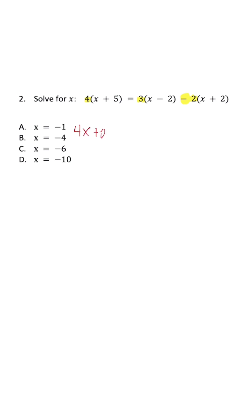So first step: 4x plus 20 is equal to 3x minus 6 minus 2x minus 4.